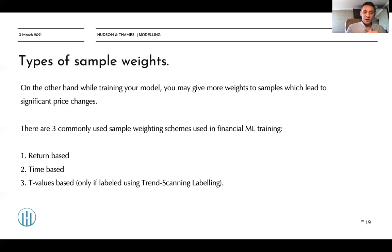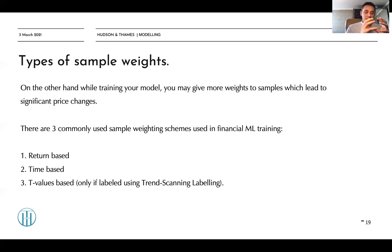If you label your dataset using trend scanning labels, you can use the absolute values of t-values to make your model pay more attention to clean and strong trends compared to ranging periods. In this case, your model can classify clean trends with higher accuracy.